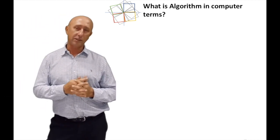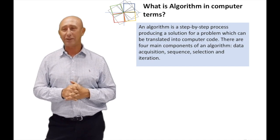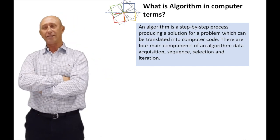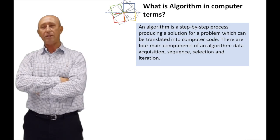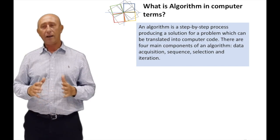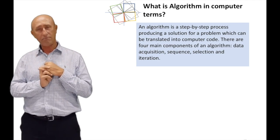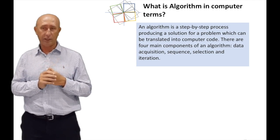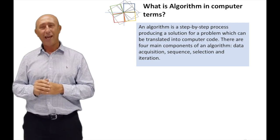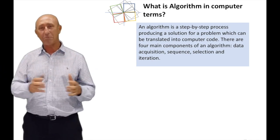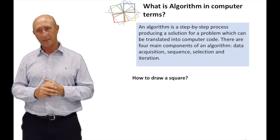So what is the algorithm in computer terms? Now we're getting a little bit more serious here. An algorithm in computer terms is a step-by-step process of producing a solution for a problem which can be translated into a computer code. There are four main components of an algorithm: data acquisition, sequencing, selection, and iteration. In general, we have a lot of experience in IT programming, and in general, if you know these things, it makes your life a lot easier when developing computer programs.